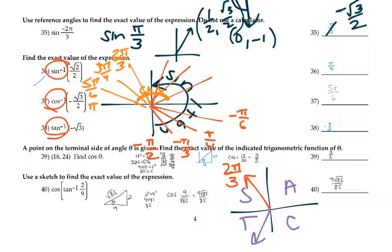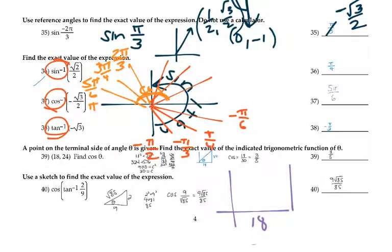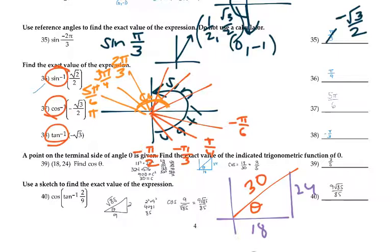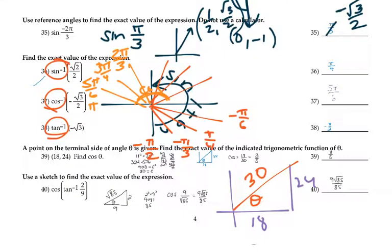The unit circle will be provided to you filled out. For number 39, a point on the terminal side is given: (18, 24) means you went right and up. Close in the triangle using the Pythagorean theorem — the hypotenuse is 30. Cosine is 18 over 30, which reduces to 3 over 5. For number 40, the tangent of an angle is 2/9, so draw a triangle with 2 opposite and 9 adjacent. The missing side is the square root of 85, and cosine is 9 over root 85, which gets rationalized.